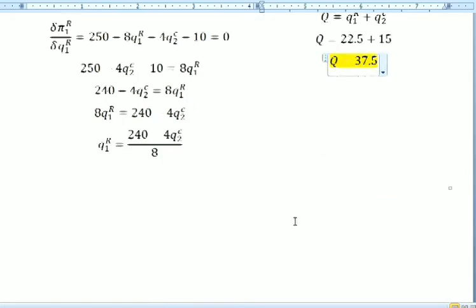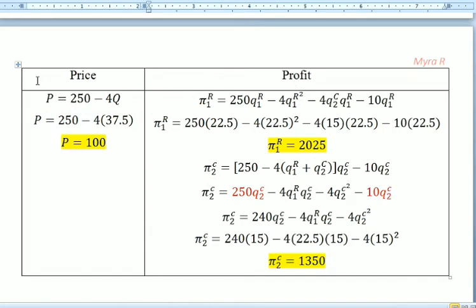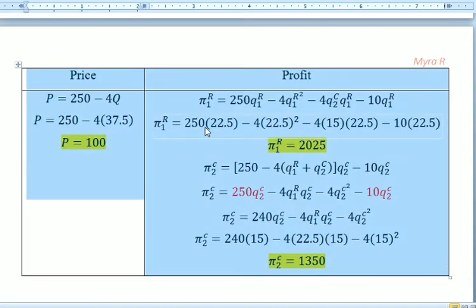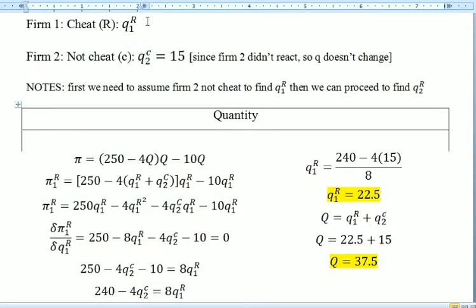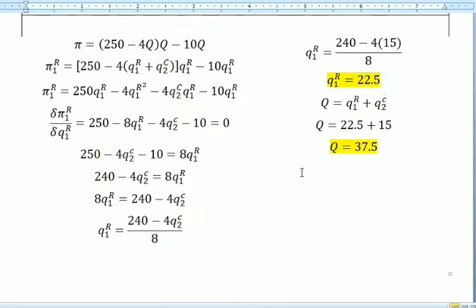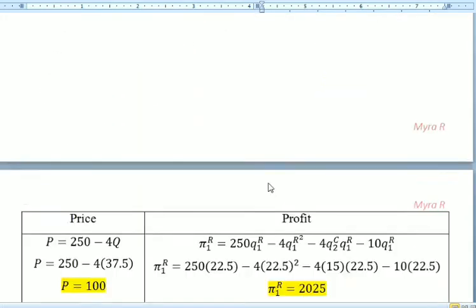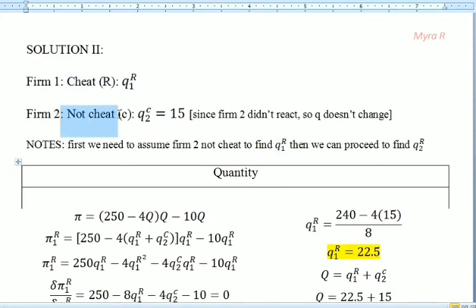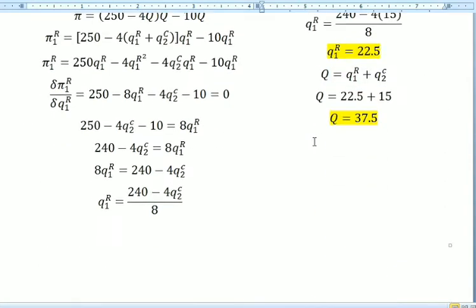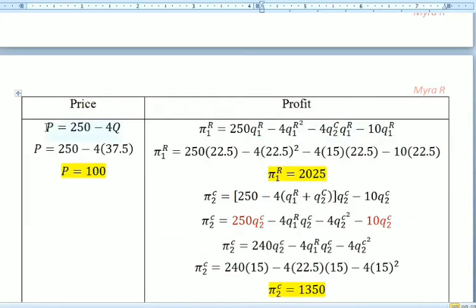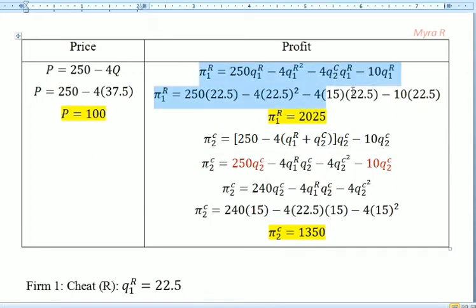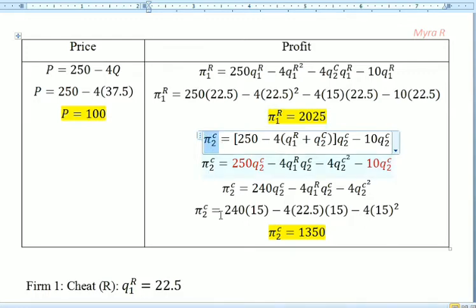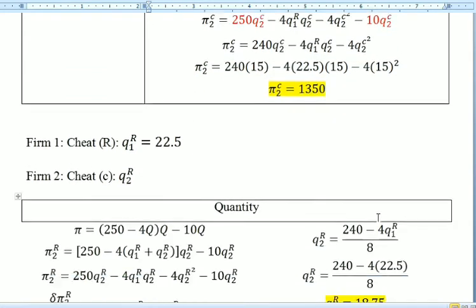We actually only need Q1R for this question. But if the question asks for the case where firm 1 cheats and firm 2 does not, I'll go through the full solution — finding the price, the profit for firm 1, and the profit for firm 2.